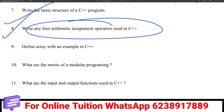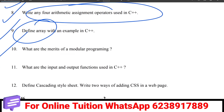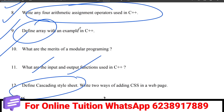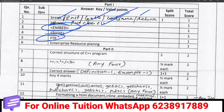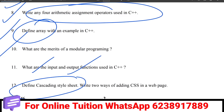Then array definition with an example, modular programming and its merits, C++ input and output functions. What is CSS? CSS stands for Cascading Style Sheet. In a webpage, we use CSS, and there are different ways to add CSS.